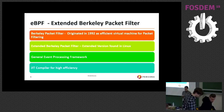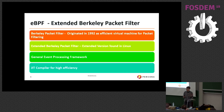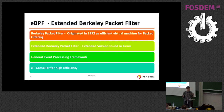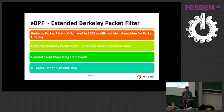eBPF stands for Extended Berkeley Packet Filter — a weird name for a monitoring tool. In reality it originated from the Berkeley Packet Filter, which was designed to build an efficient virtual machine for packet filtering. The 'extended' part means it was extended to do much more. The Linux kernel has support for that virtual machine called eBPF. In general, eBPF is an event processing framework used a lot for monitoring, and in modern kernel versions we have a JIT compiler which compiles programs for higher efficiency.